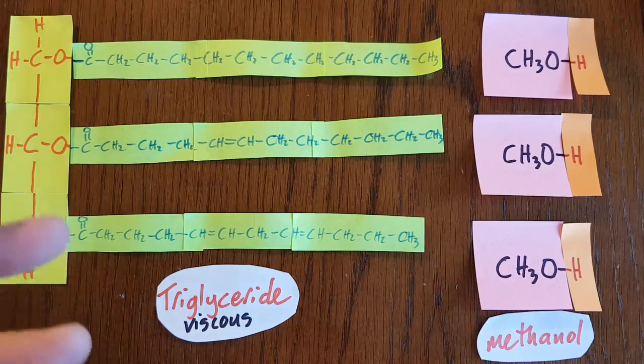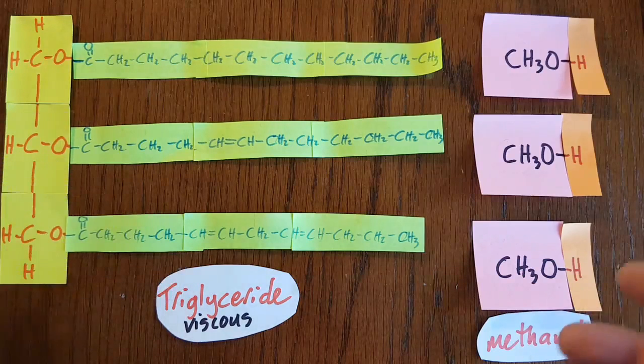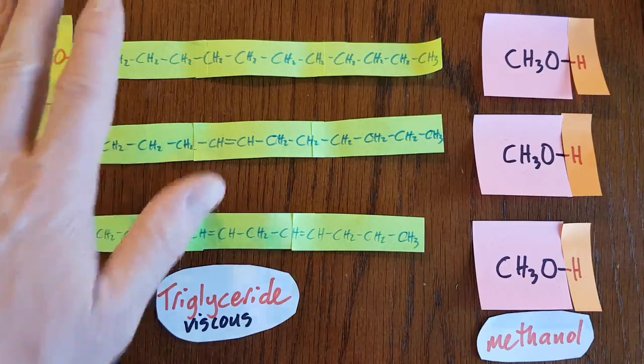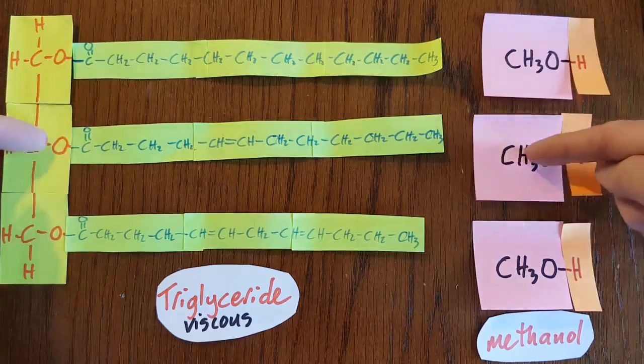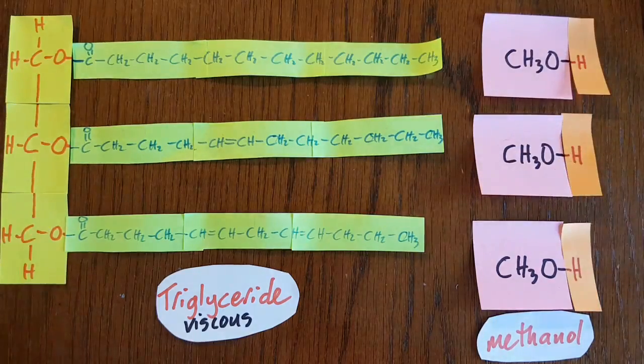So that needs sodium hydroxide and heat. So set it up like this, triglyceride and the three alcohols, and then just swap this, this, and this for each other.